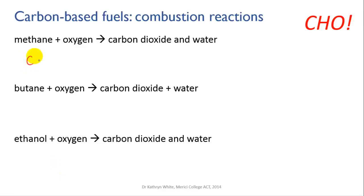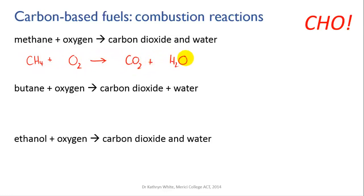Let's try methane burning in oxygen. Methane is CH₄ plus oxygen gives carbon dioxide plus water. Balance the carbon first: one carbon on the left, one carbon on the right — that's fine. Next, the hydrogens: H4, so four hydrogens on the left, and in the water there are two hydrogens, so we need four hydrogens on the right. We put a two in front of the water, which gives us four hydrogens.